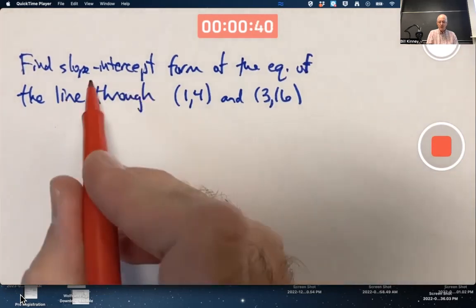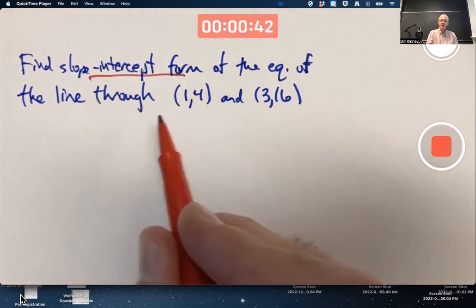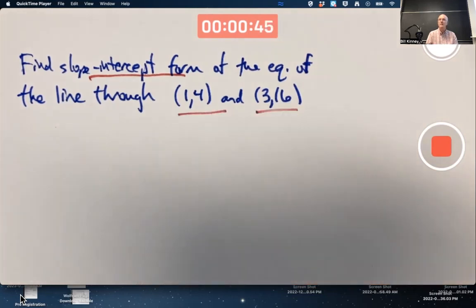This problem says, find the slope-intercept form of the equation of the line through these points, 1,4 and 3,16.